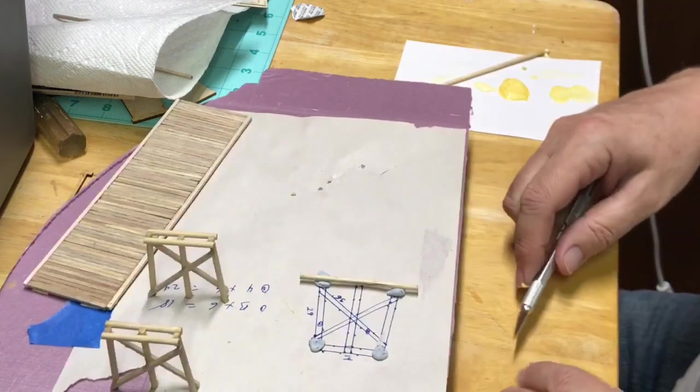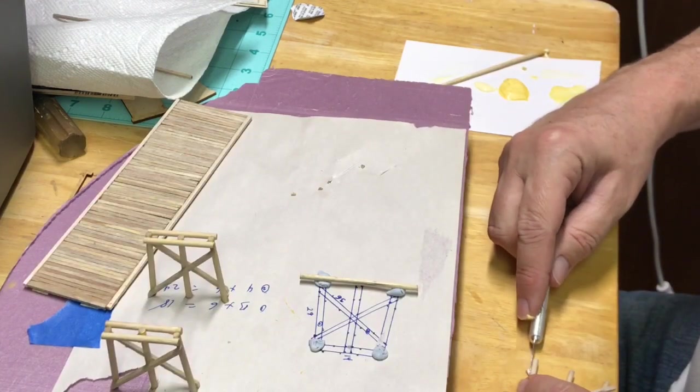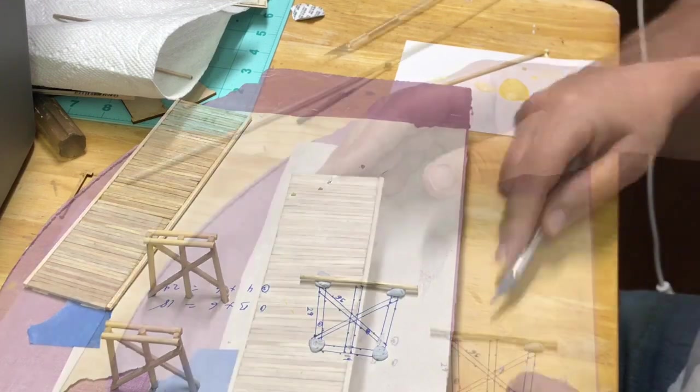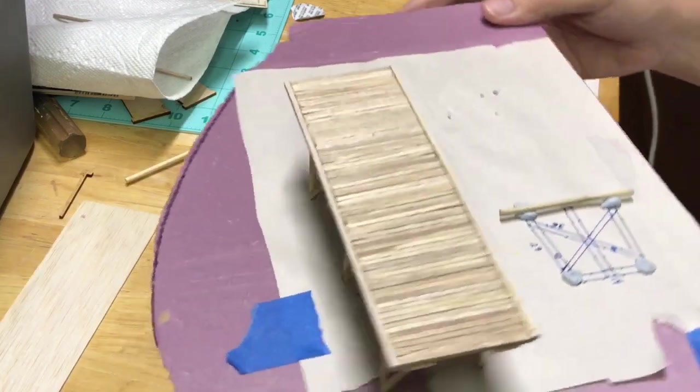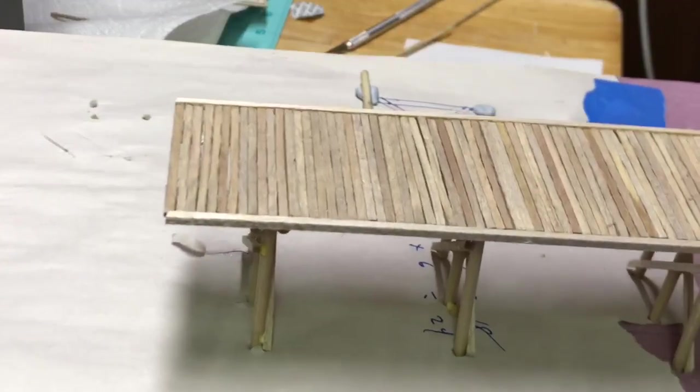Once the glue dried there was a little trimming that needed to be done, and then I set the piers in the extruded foam. That way I could take a look at it in preparation for the next step.